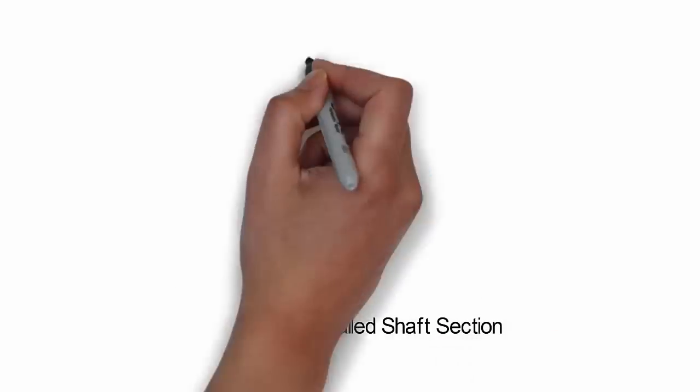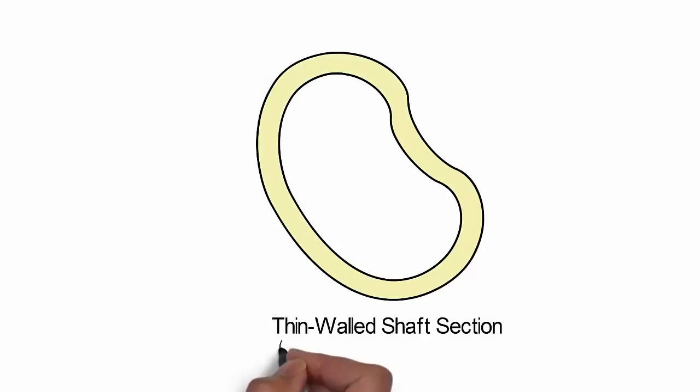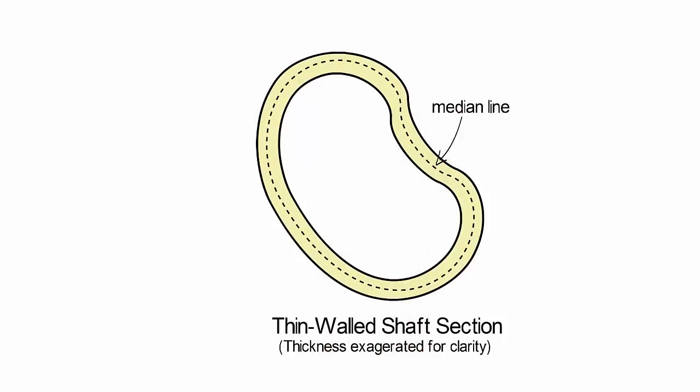In this video, we will relate resultant torque to the shear flow distribution in an arbitrary thin-walled closed section shaft. In the drawing shown here, the wall thickness has been exaggerated so that we can more clearly annotate it during our derivation.